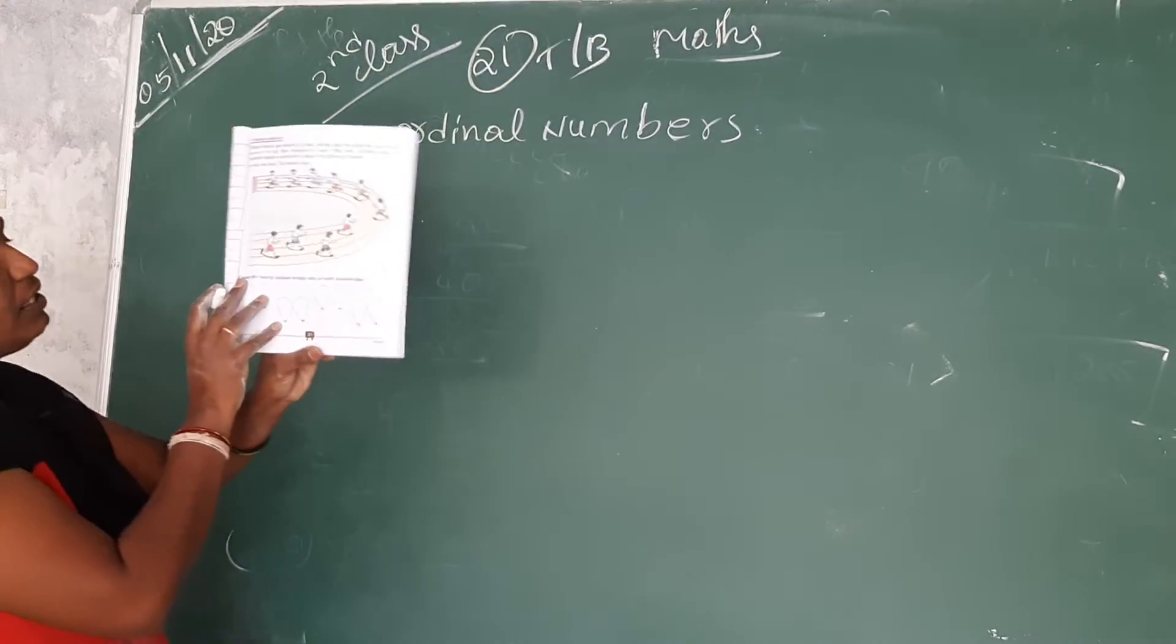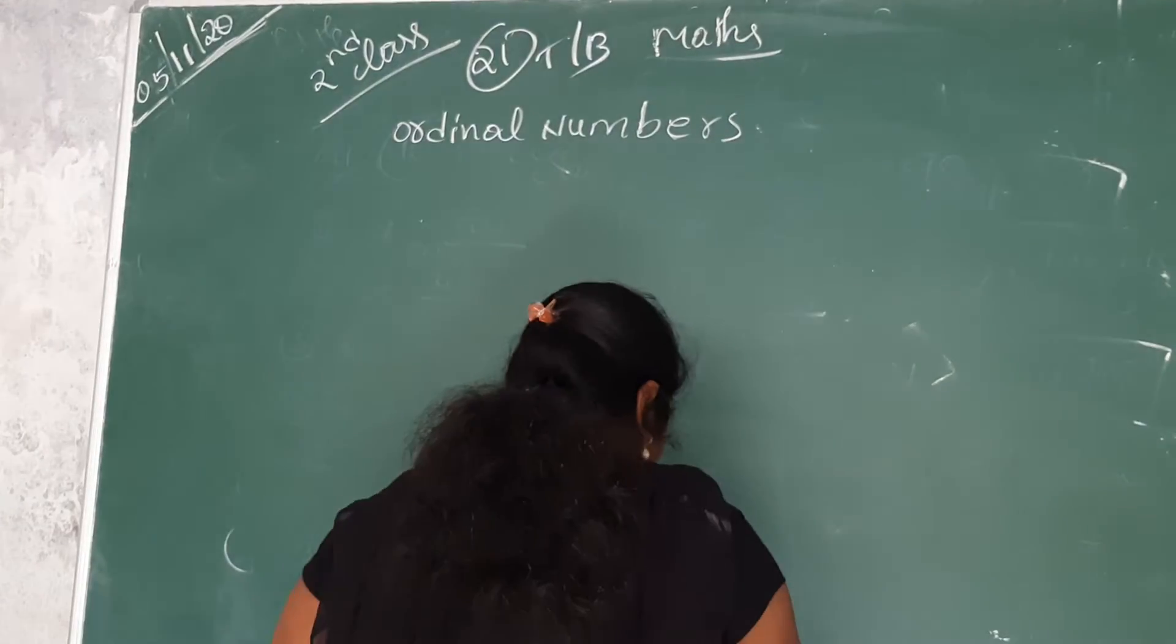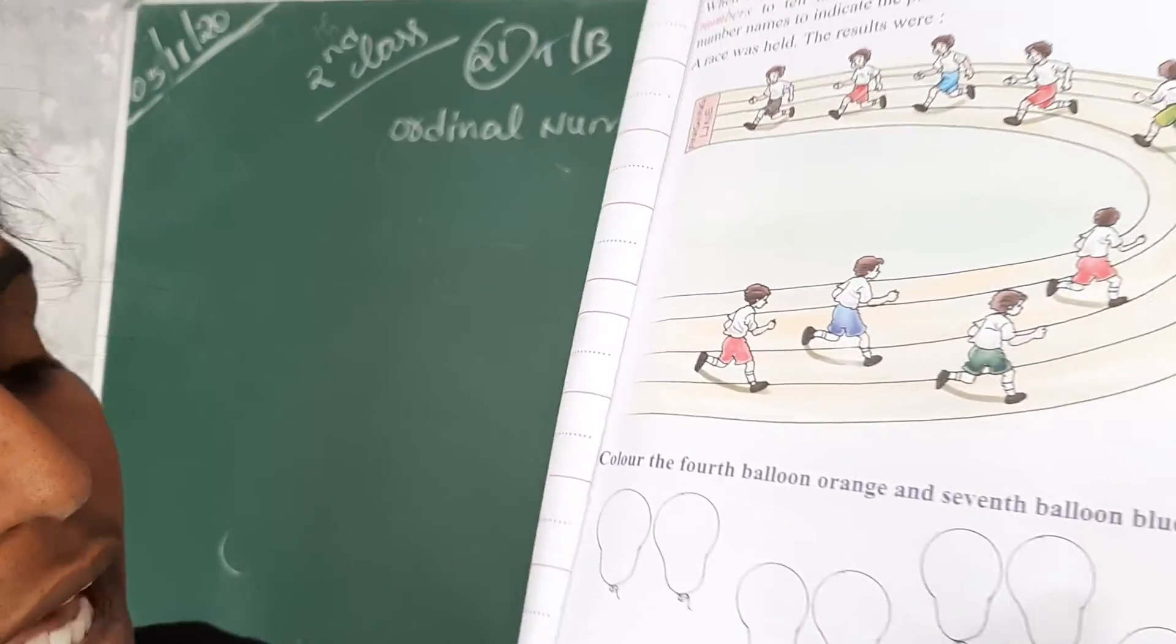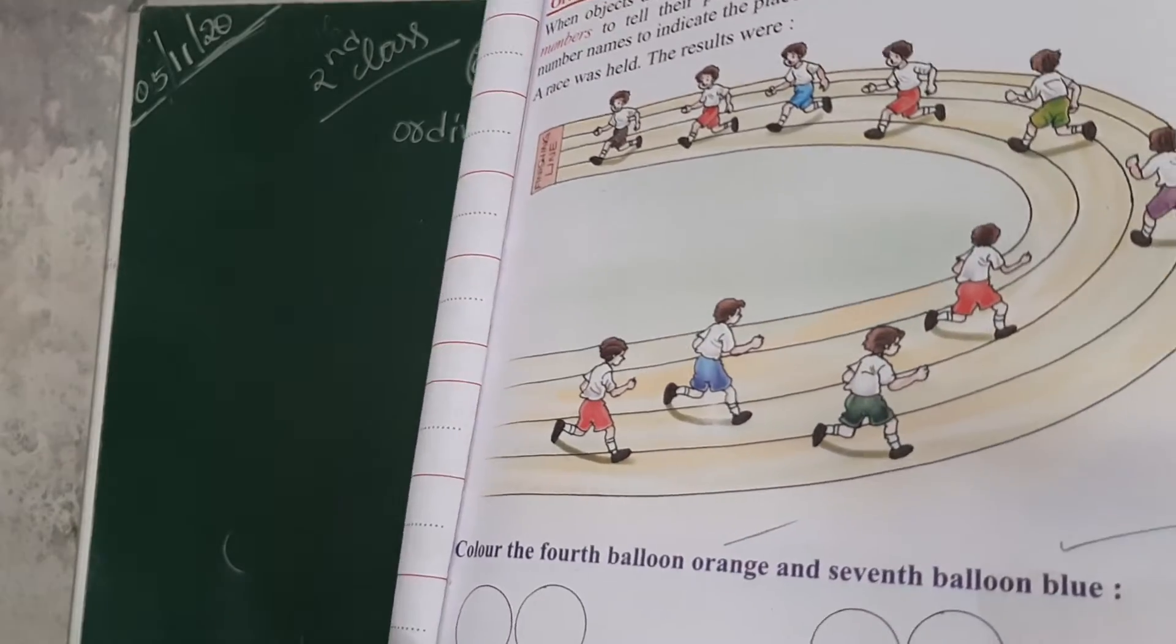So here given colour the fourth balloon orange and seventh balloon blue. So here are given some balloons. Here are some balloons. So fourth balloon is orange colour and seventh balloon is blue colour.